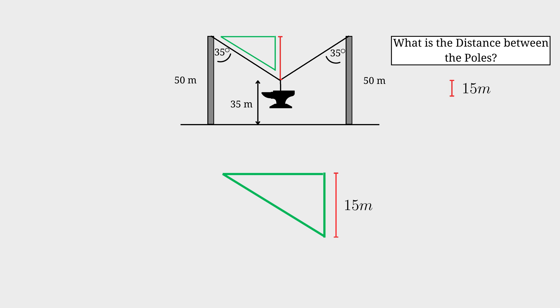Now we need to find this angle. This angle will be 90 degrees minus 35 degrees because it's a complementary angle. Thus the angle will be 55 degrees. Let's call this side x which is half of the distance between the two poles.